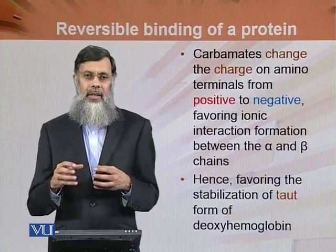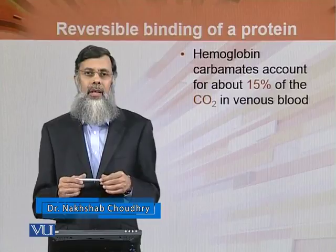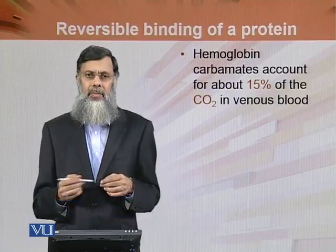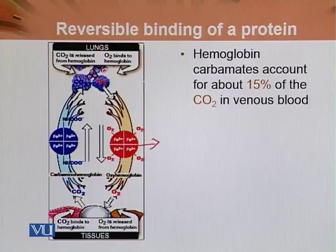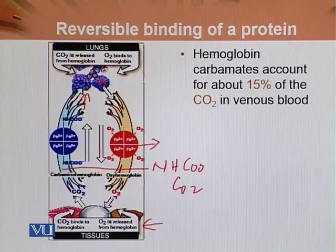یہ effect peripheral tissues میں effective ہوگی جہاں سے hemoglobin نے CO2 اٹھانی ہے اور lungs تک transport کرنی ہے۔ Hemoglobin carbamates account for about 15% of the carbon dioxide in venous blood۔ اس diagram میں ہم دیکھ سکتے ہیں کہ lungs سے چار oxygen لے کر peripheral tissue میں deliver کی جاتی ہے اور وہاں سے amino terminal (NH) کے ساتھ CO2 carbamate form میں attach ہوتی ہے اور lungs میں release ہو جاتی ہے۔